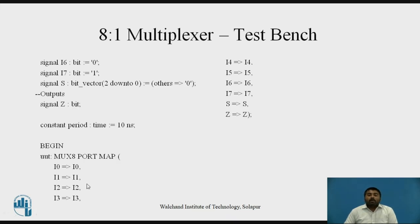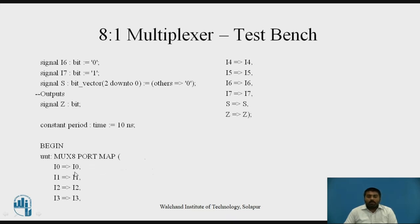Then write the component instantiation. The syntax requires a label, then the component name, then port map with a bracket mapping the signals. Using positional mapping: I0 is mapped with I0, I1 is mapped with I1, and so on. S is mapped with S and the Z output is mapped with the output signal.